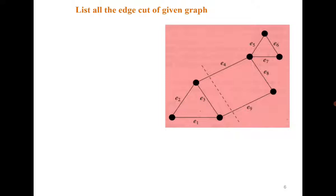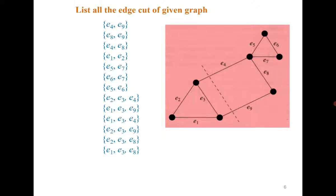Here is a very interesting exercise — I suggest you spend some time on it. Find all the edge cuts of the given graph. A hint: the number is two digits. Initially you may find five, six, or eight edge cuts. The answer is that there are seven edge cuts of size two and six edge cuts of size three, giving a total of 13 edge cuts.